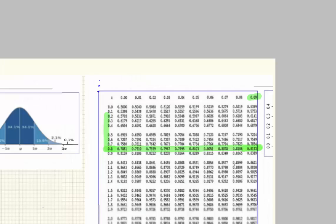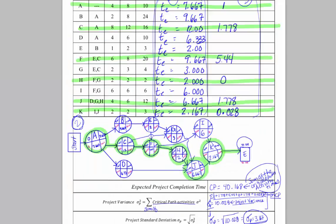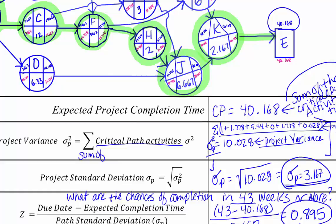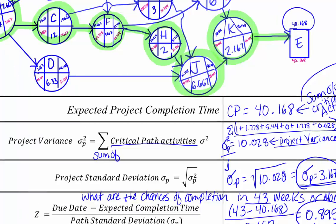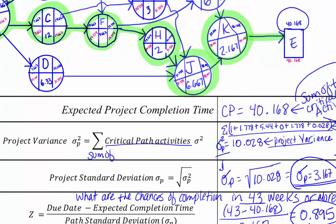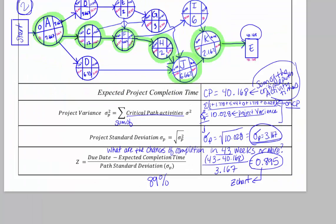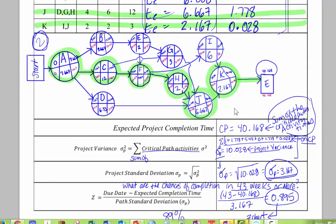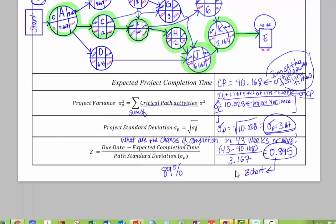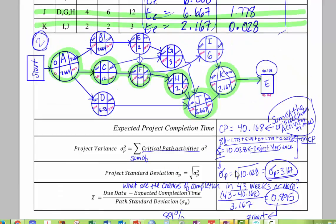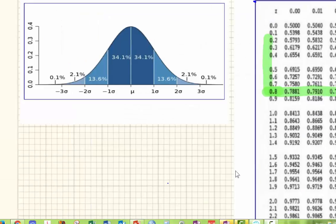So we get 0.8133. So what that tells us then is, how we interpret that is, we have roughly an 89% chance of completion in 43 weeks or less. But what we want to know is 43 weeks or more, so we're going to go over here and just draw it on here because I think it's so much easier.